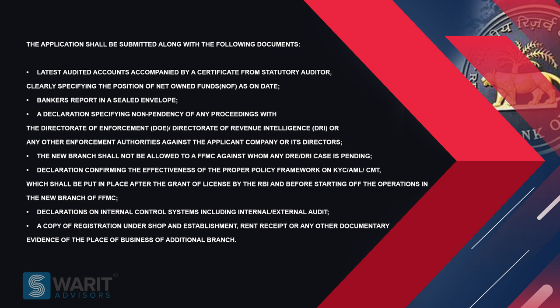Declarations on internal control systems including internal or external audit. A copy of registration under shop and establishment, and rent receipt or any other documentary evidence of the place of business of the additional branch.